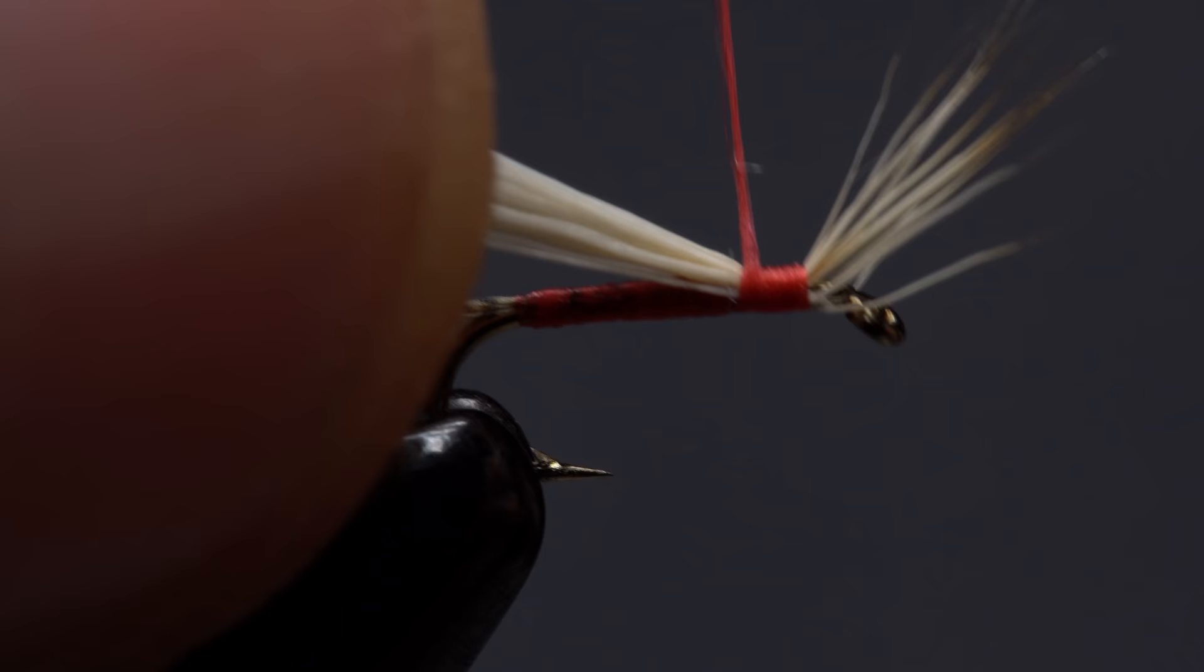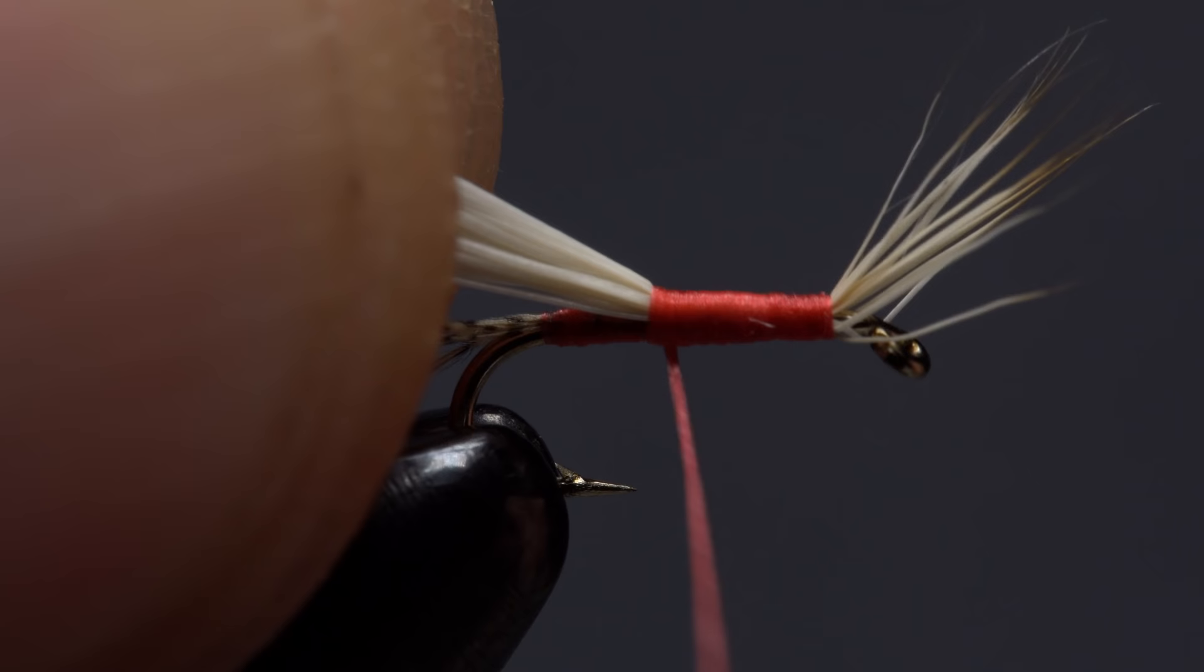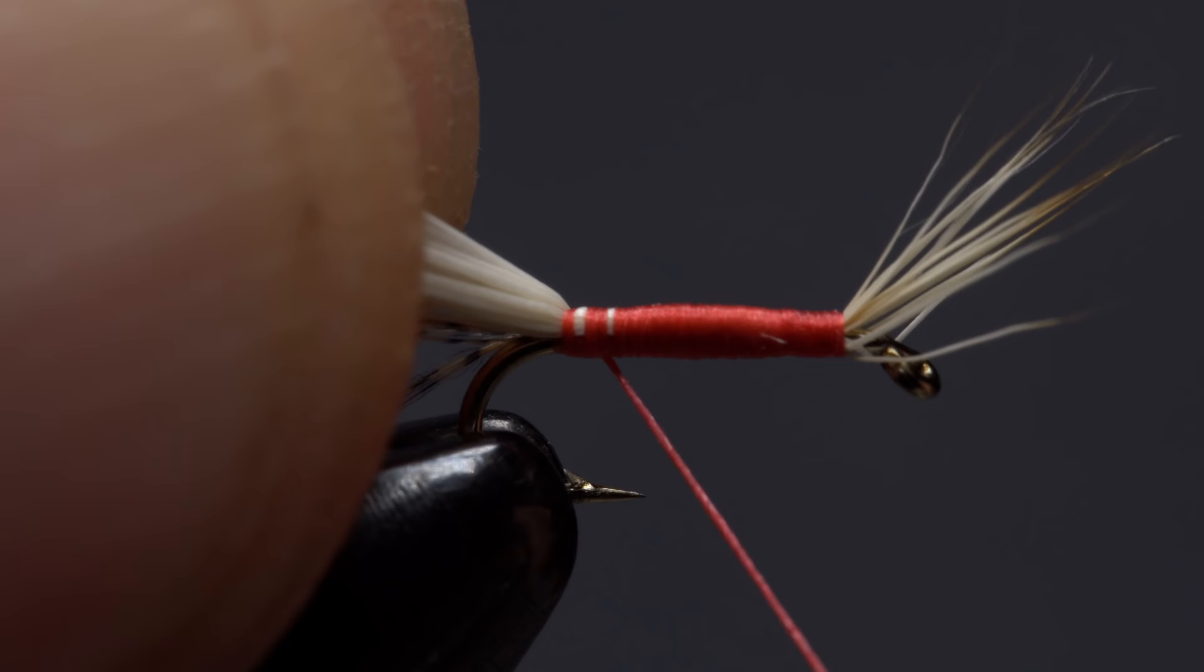Begin taking wraps rearward pulling up on the hair at an angle as you go. This will ensure touching thread wraps and help keep the hair directly on top of the hook shank. Continue taking wraps all the way back to the start of the hook bend then take wraps forward to the initial tie-in point.